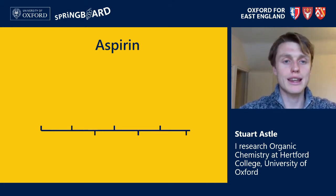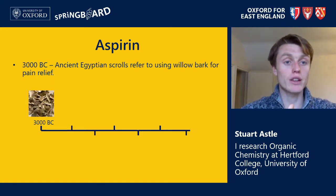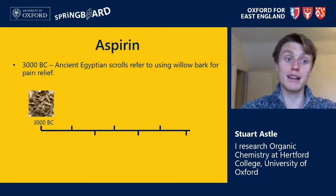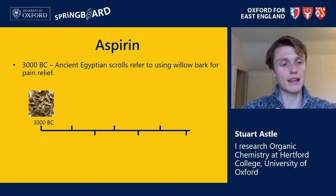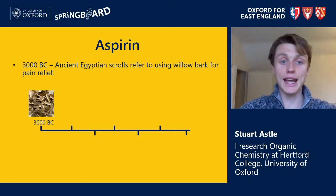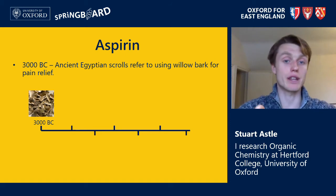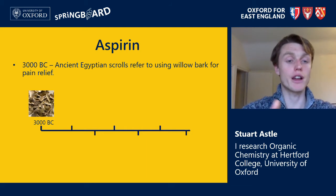The first drug I want to talk about is aspirin, a painkiller. The story of aspirin dates back several thousand years to 3000 BC — scrolls from the ancient Egyptians dating this far back refer to the use of willow bark as a means of relieving pain. If you were suffering from a stomach ulcer or a broken leg, for example, you might be given a piece of willow bark to chew on. The ancient Egyptians had no idea how willow bark had this magical pain-relieving effect — they just knew that it did, and it was used as a treatment over 5,000 years ago.